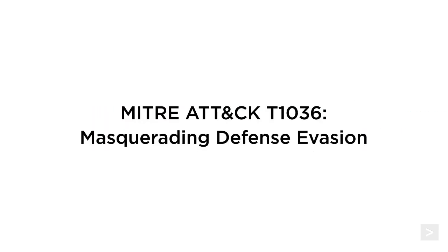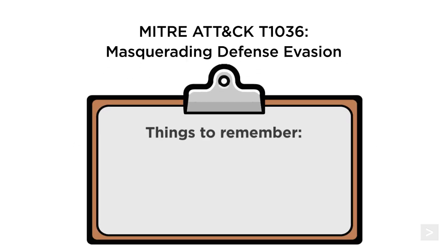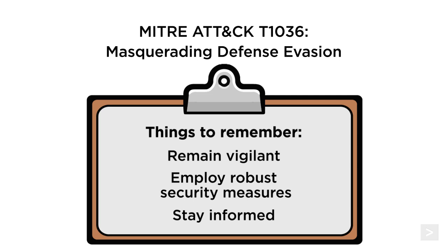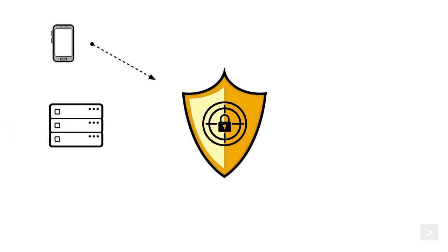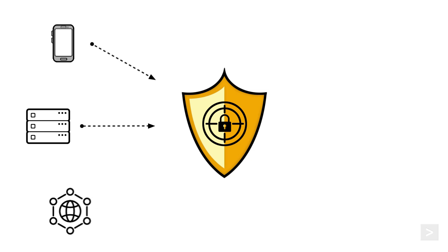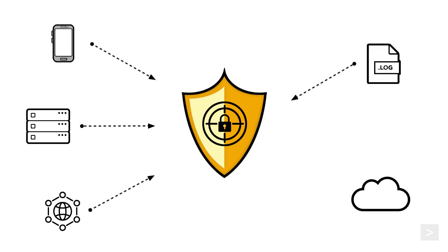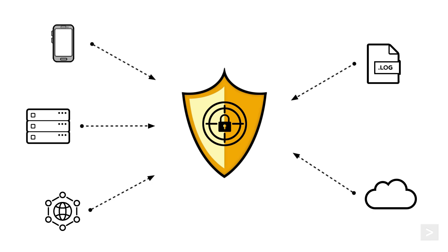The MITRE ATT&CK technique of masquerading underscores the critical importance of staying one step ahead of cyber adversaries. As the threat landscape continues to evolve, organizations must remain vigilant, employing robust security measures and staying informed about the latest tactics and trends. By understanding and effectively countering masquerading techniques with the help of Splunk ES with BA, we can fortify our defenses, protect our digital assets, and ensure the resilience of networks against ever-present and ever-evolving cyber threats.